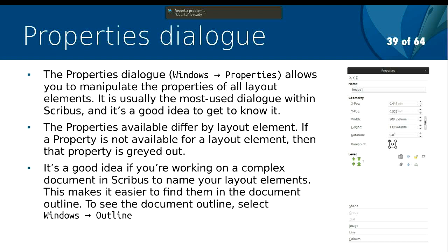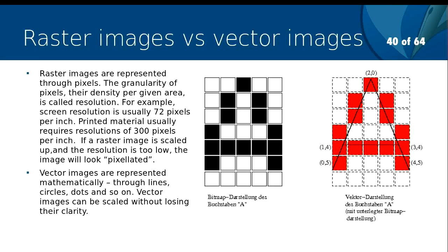We've covered a lot of the properties dialogue already. Basically the properties dialogue is the way that you manipulate elements within Scribus. Different layout elements will have different properties that you can manipulate there. For example, if you're using a vector image, you won't have the image properties available to you. In your tutorial files, we have a Part 3 layout document for you to have a look at.